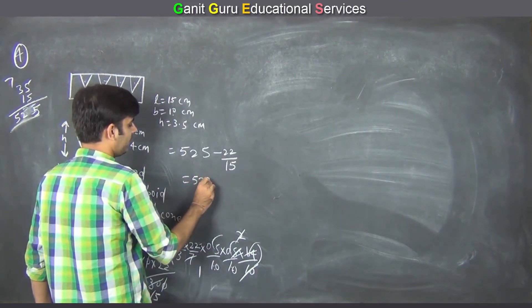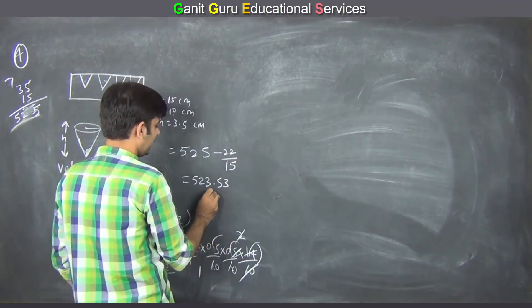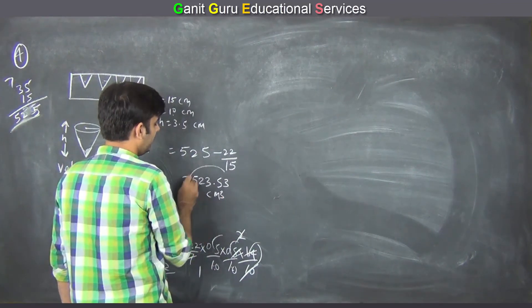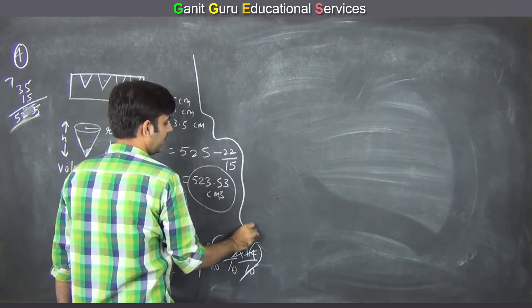525 minus 22 by 50 equals 523.5, 523.5 cubic centimeters. This is the volume. Question 4 complete.